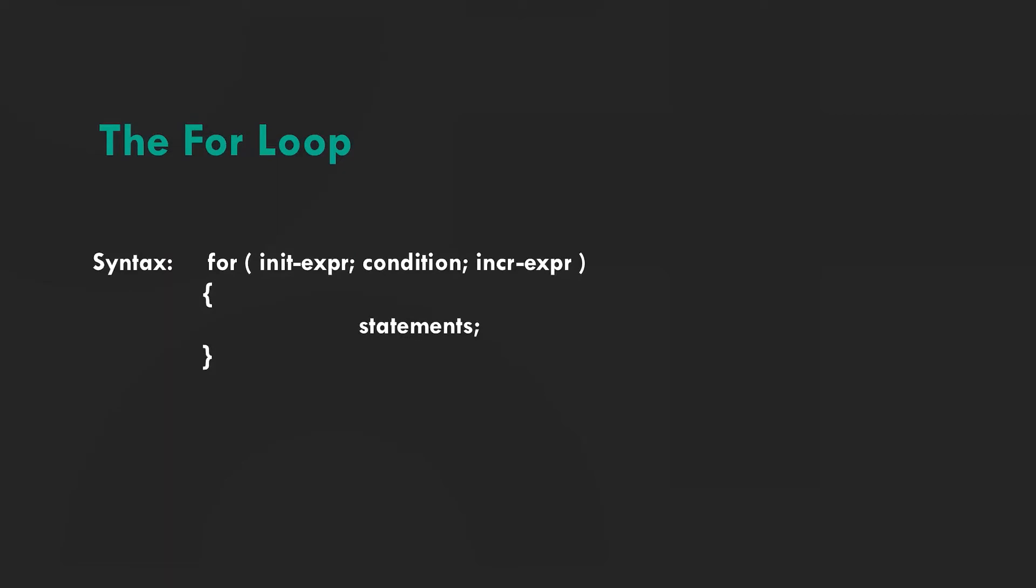The for loop is basically a repetition control structure that executes some block of code a number of times. The init expression is executed first and only once. This step allows you to declare and initialize any loop control variables, like int i equals zero.